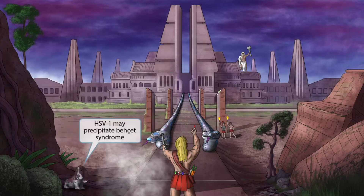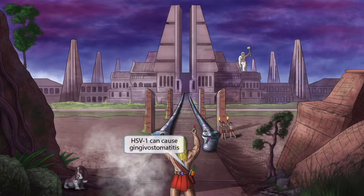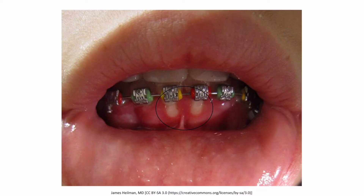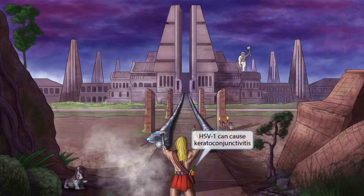Behcet syndrome is a type of vasculitis characterized by genital and oral ulcers, uveitis, and erythema nodosum. Now let's take a close look at Hercules' satchel — notice he has brought along some carrots and ginger. Ginger sounds like 'gingivo,' which should help you remember that HSV1 can cause gingivostomatitis, a condition characterized by ulcers affecting the gingiva and sometimes surrounding structures such as the lips and hard palate. The carrots sound like 'kerato,' and should help you remember that HSV1 can cause keratoconjunctivitis.